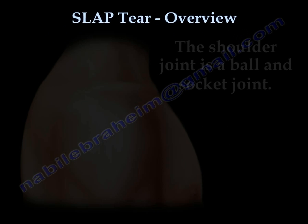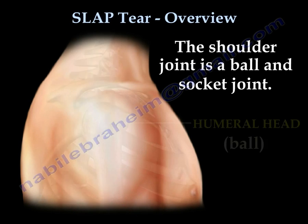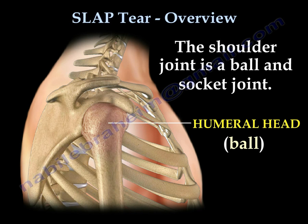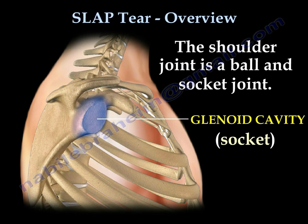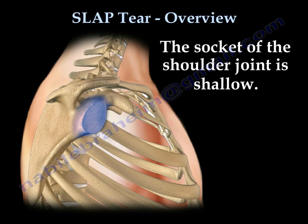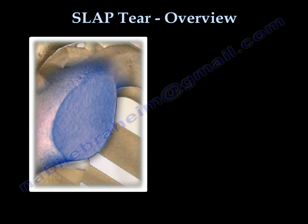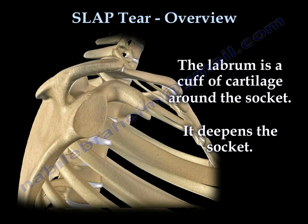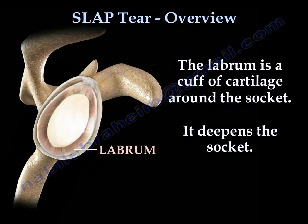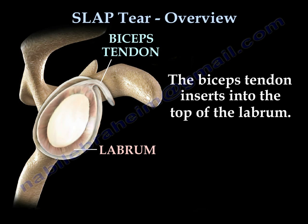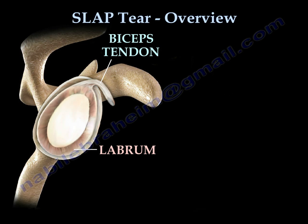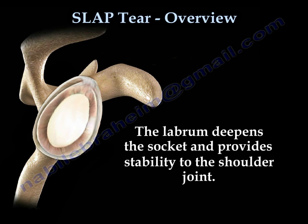SLAP Tear Overview. The shoulder joint is a ball and socket joint. The socket of the shoulder joint is shallow. The labrum is a cuff of cartilage around the socket that deepens it. The biceps tendon inserts into the top of the labrum. The labrum deepens the socket and provides stability to the shoulder joint.